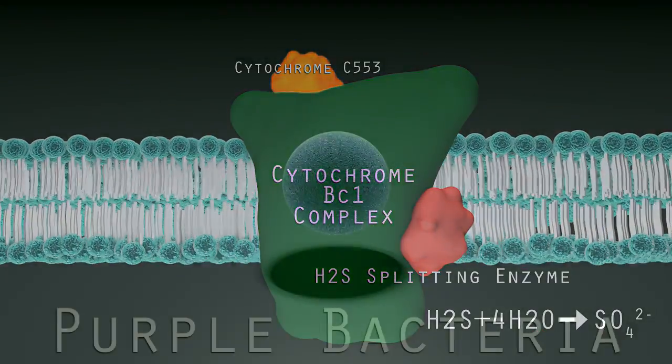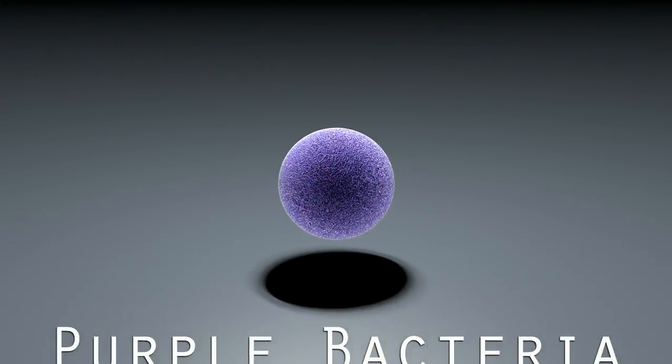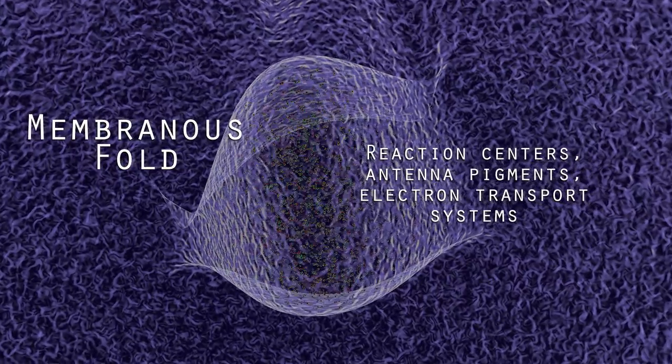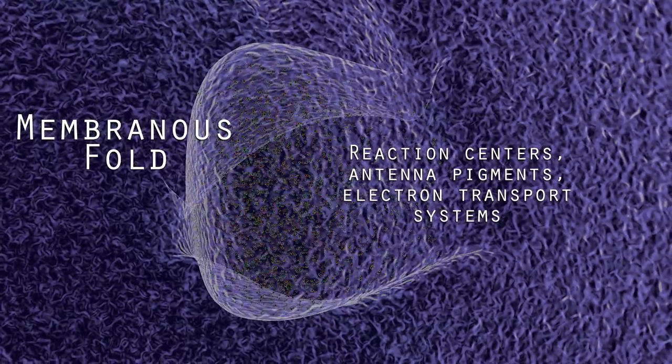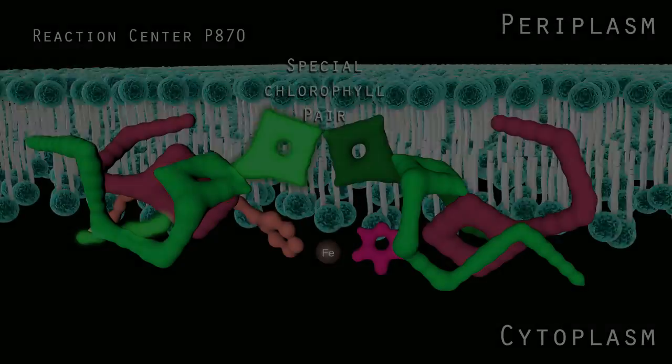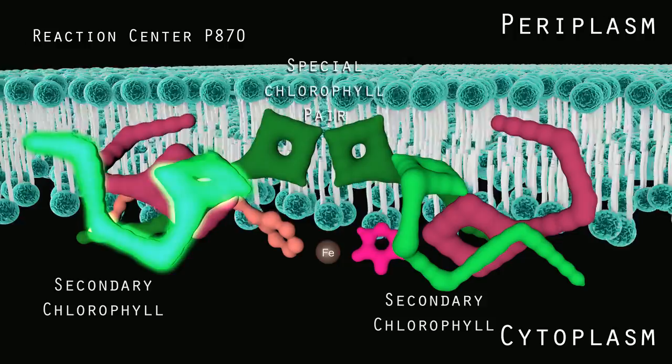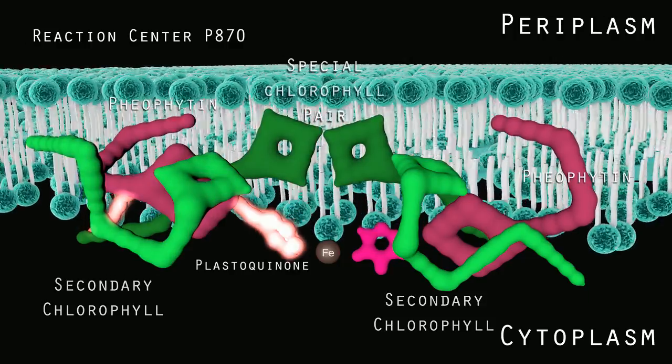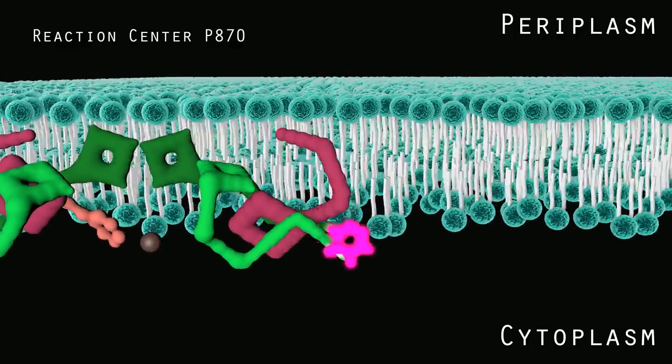Purple bacteria do not have specific photosynthetic structures. Rather, the photosynthetic components freely float in a membranous fold. Light is absorbed into reaction center H70 causing an electron to be transferred down a series of electron acceptors to a quinone.